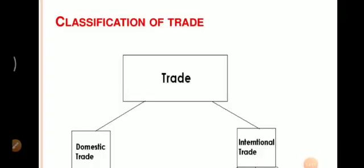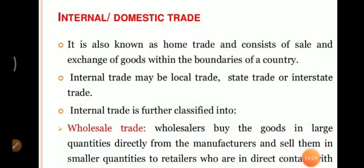Trade दो प्रकार का होता है: पहला Domestic Trade, दूसरा International Trade। Internal या Domestic Trade — also known as Home Trade — consists of the sale and exchange of goods within the boundary of the country। Internal trade may be local trade, state trade, or interstate trade। Domestic trade के बारे में — इसमें किसी भी manufacturing product का खरीदारी, sale, या exchange एक certain दायरे के अंदर होता है — उसी को internal and domestic trade कहा जाता है।